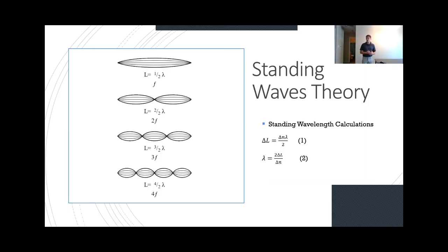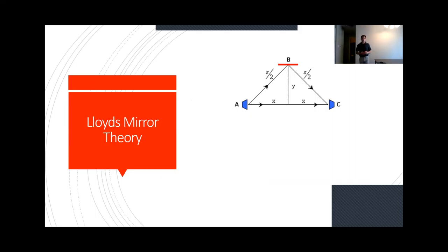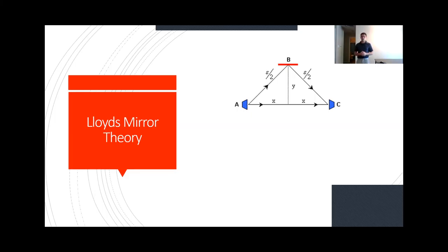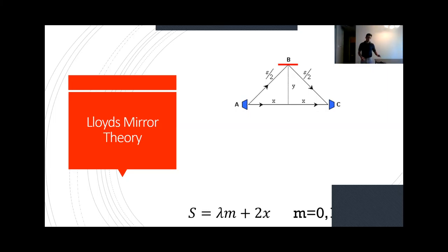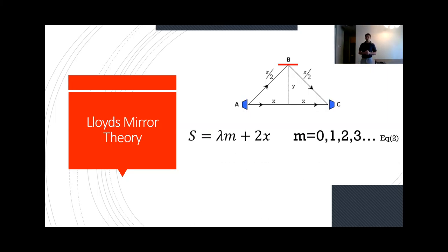For the Lloyd's mirror experiment, it's going to be set up where A is the transmitter, C is the receiver, and B is the reflector. S is going to be the path length, and 2x is going to be the length from A to C. We know that when two waves match in phase, they create a maximum through constructive interference. So at C, you're going to see a maximum if they're in phase. In order to get them in phase, the distance from A to C has to differ by a multiple of the actual wavelength. From that idea of constructive interference, we can draw the formula: path length s equals m times lambda plus 2x.